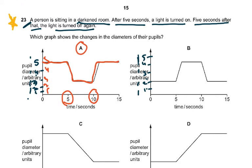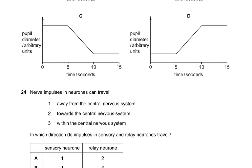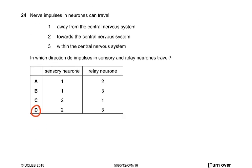Please understand this — don't just memorize the answer. A person sitting in a dark room has a larger pupil. After five seconds the light turns on, so the pupil size must decrease. From 5 it comes to 3, stays for about four seconds, then at ten seconds the light is turned off, so it returns to the 5mm diameter. That is why the answer was A, and you have to figure this out between five and fifteen seconds.